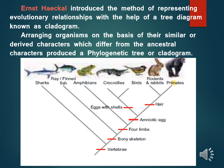In this slide, I am showing an example of a cladogram which was introduced by Ernst Haeckel. This shows the evolutionary relationship between animals. In this cladogram, on the top, it shows different types of animals like shark, ray or finfish, amphibians, crocodiles, birds, rodents, and primates. Rodents are animals which have well-developed front teeth or incisors to cut vegetables. Primates are animals which have forward-looking eyes and grasping fingers.